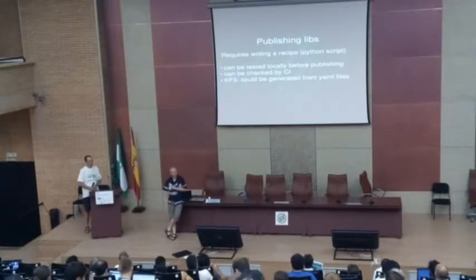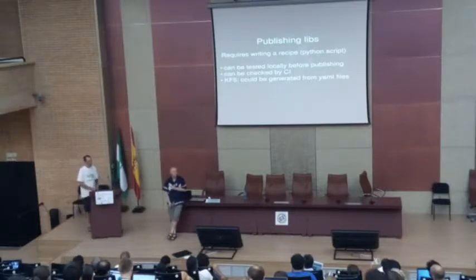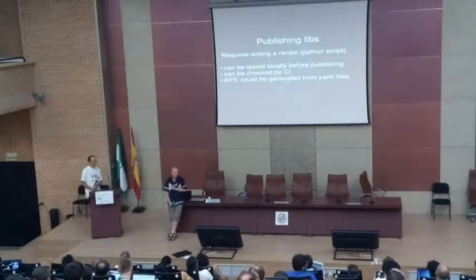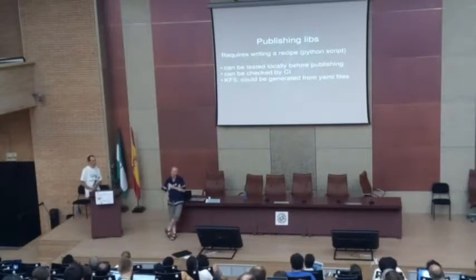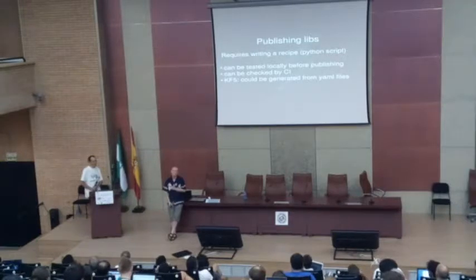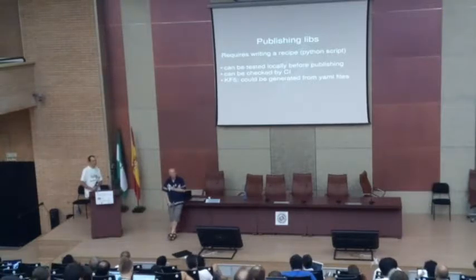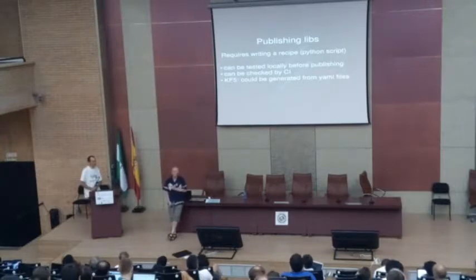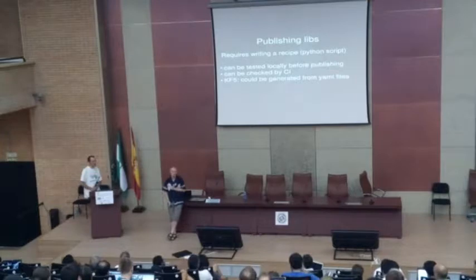Publishing libraries is slightly more involved than with Cargo — you write a small recipe, which is a Python script with a particular API. A few interesting things: it can be tested locally before you publish, so you can pretend it's already in the Conan database and try to build stuff. It can also be checked on CI. We have strong indications that in the case of the KDE Frameworks, we could generate those recipes from the YAML files we already have — we might want to make dependencies more explicit, but then we could generate them.